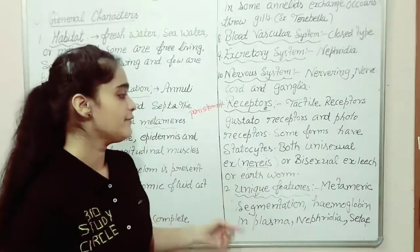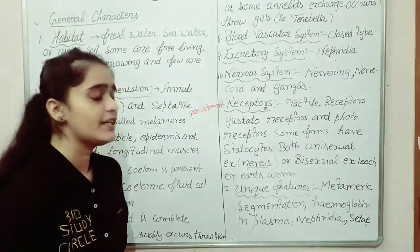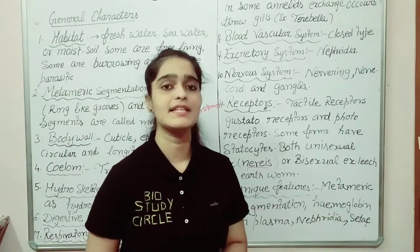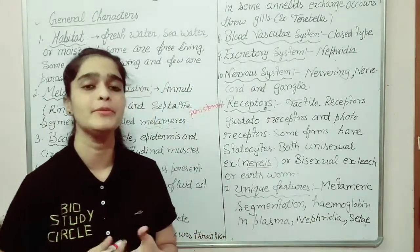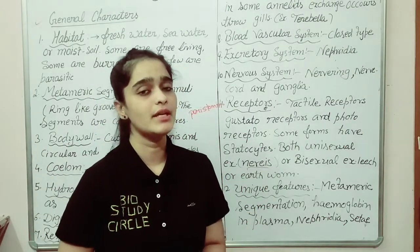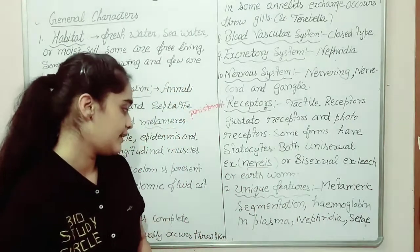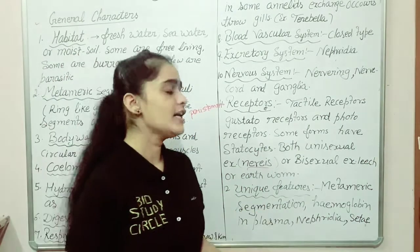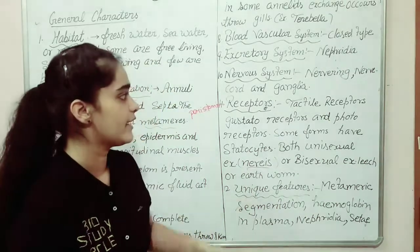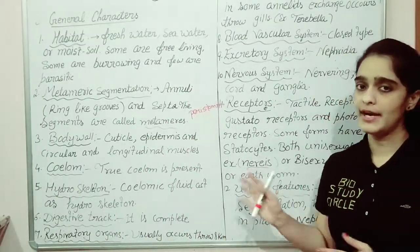The unique features of this phylum include: metameric segmentation — a segmented body; red color pigment hemoglobin present in the blood; nephridia present as excretory organs; and setae present. These are the general characteristics of phylum Annelida.